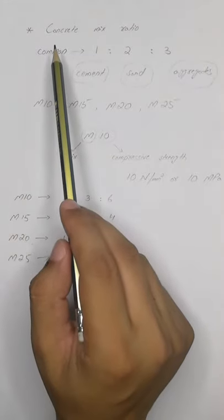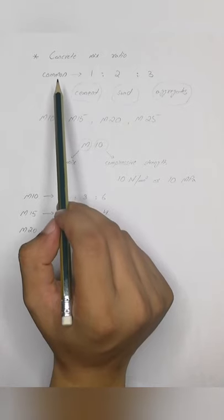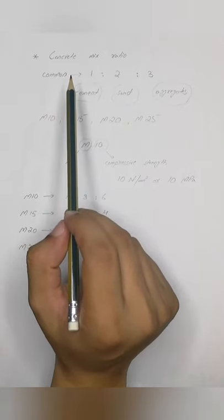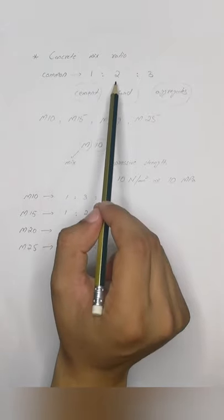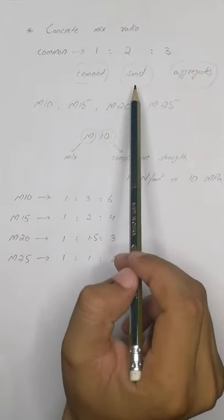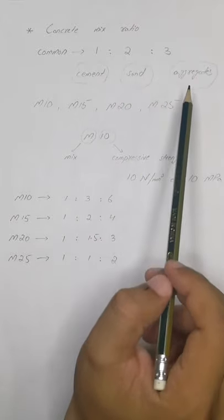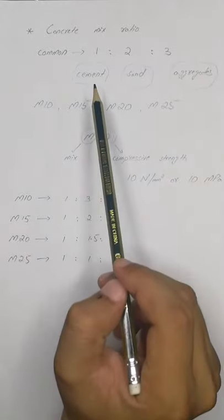In this video, we will learn about concrete mix proportions. The common concrete mix which people normally use for general work is 1:2:3, which is one bag of cement, two bags of sand, three bags of aggregates.